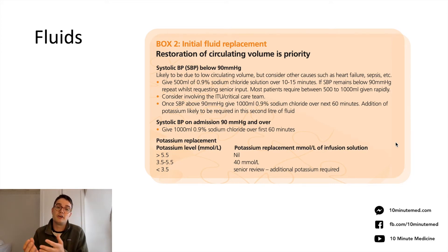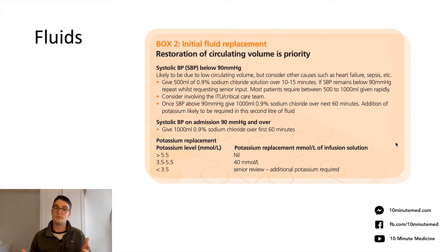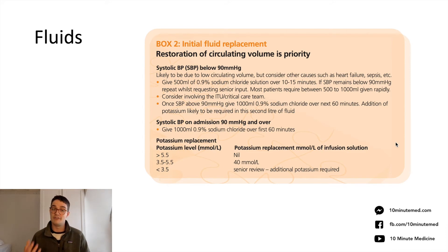The type of fluid is a contentious topic. The guidelines recommend normal saline — 0.9% sodium chloride — as it's readily available, studies show no real difference between Hartmann's and sodium chloride, and potassium can easily be added. Intensive care physicians may favour Hartmann's due to the risk of hyperchloraemic metabolic acidosis with normal saline, but looking at the current guidelines, normal saline is the preferred fluid.